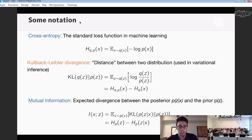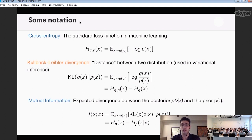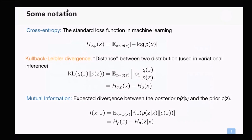The main quantity I care about is the mutual information between two random variables X and Z. The mutual information is the expected divergence between the posterior of Z after an observation of X and the prior of Z — it quantifies how much information an observation of X carries about Z. So the three main quantities I will use are: cross-entropy loss, KL divergence, and mutual information. Feel free to interrupt with questions at any moment.